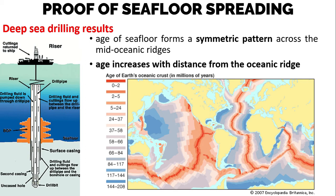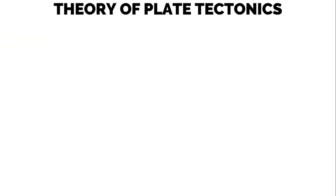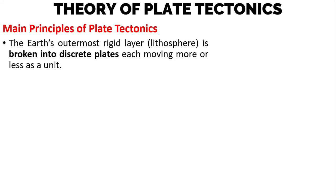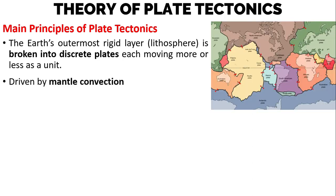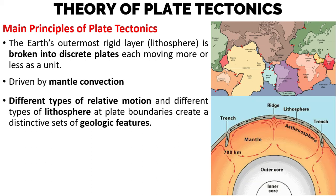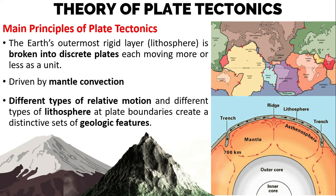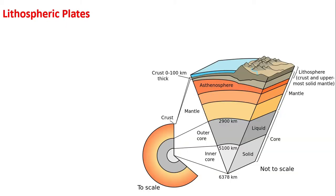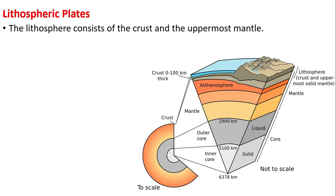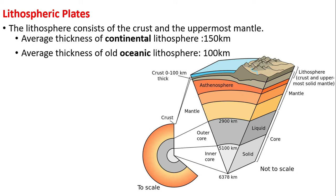Now, what is the theory of plate tectonics? The main principle is that the Earth's outermost rigid layer, the lithosphere, is broken into discrete plates, each moving more or less as a unit. Plate tectonics is also driven by mantle convection. Different types of relative motion and different types of lithosphere at plate boundaries create distinctive sets of geologic features like mountains and volcanoes. The lithosphere consists of the crust and the uppermost mantle. The average thickness of continental lithosphere is 150 kilometers.